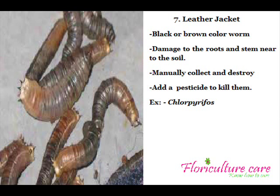Leather Jacket is a black or brown color worm that lives in soil, not bigger than 1 inch. It mostly damages roots and the stem near to the soil. Manually collect and destroy them during soil preparation, or add a recommended pesticide like Chlorpyrifos to kill them.